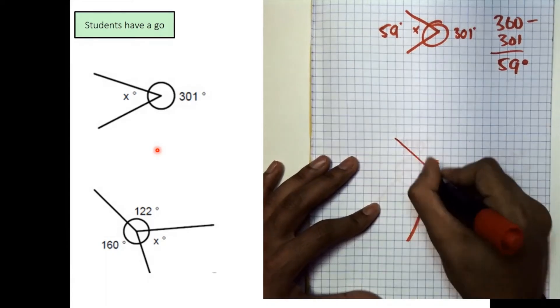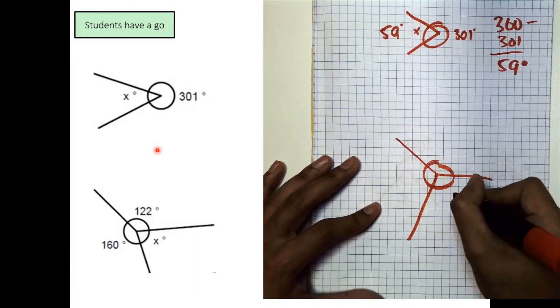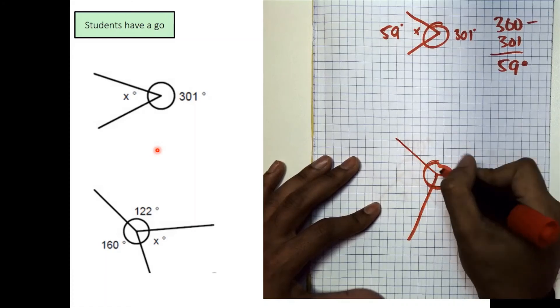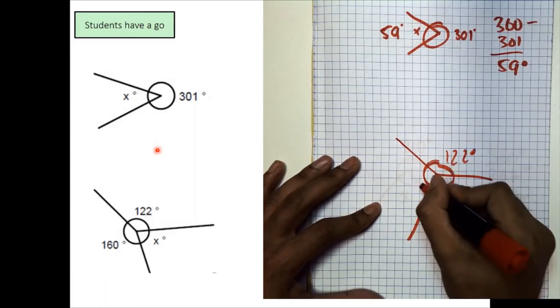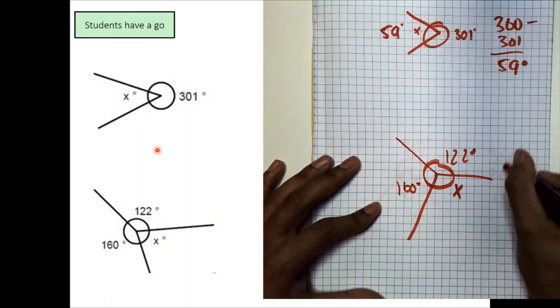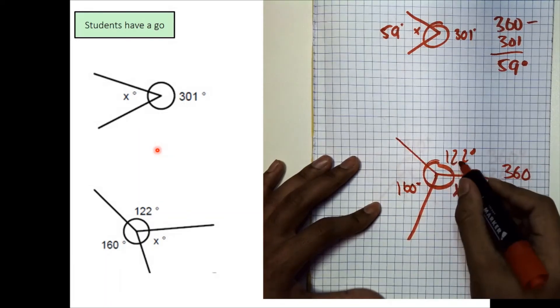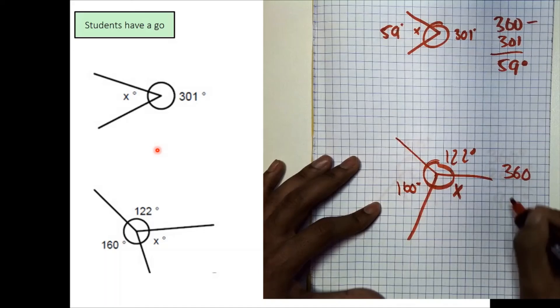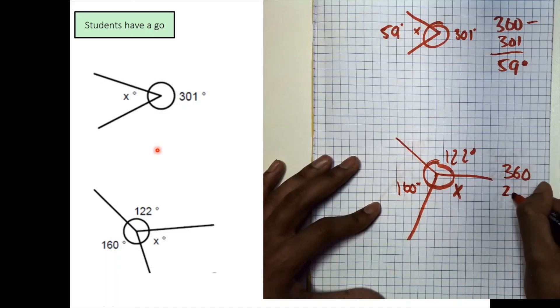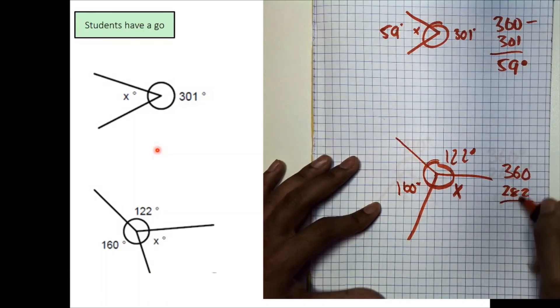Now the next question. You can see, now there's a total of three angles that makes up our 360 degrees. Two of them we have, 122 and 160, x is what we're trying to find out. So we need to take away the 122 and 160 away. So I'm going to add these two together. That would give me 282 and then I can do column method to calculate this.